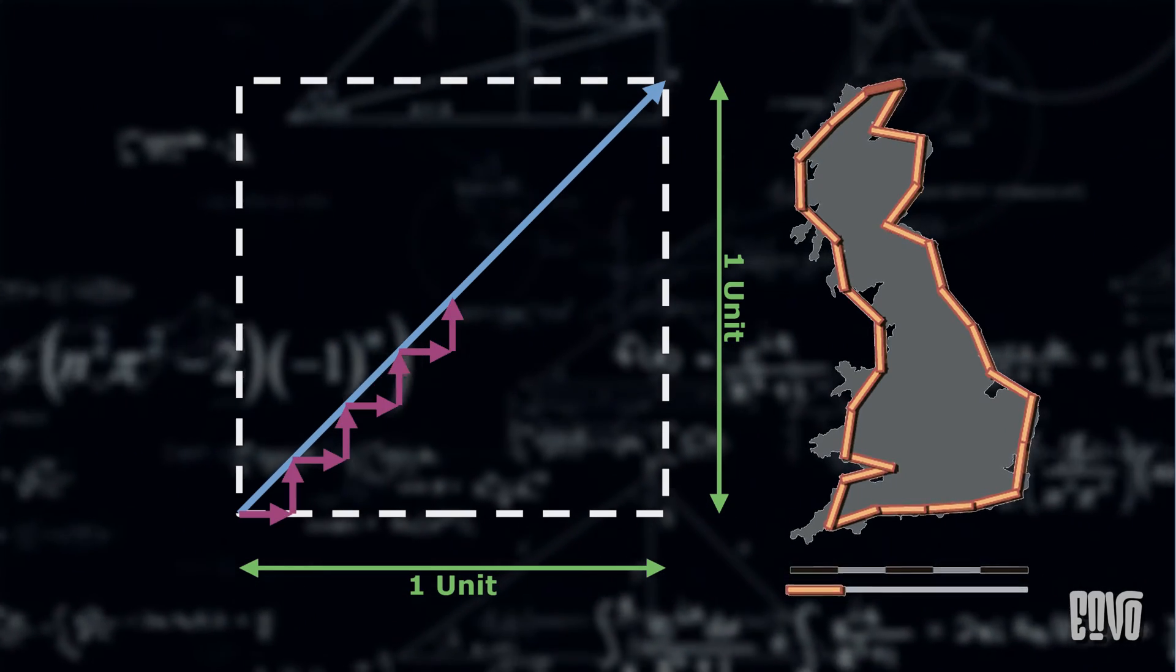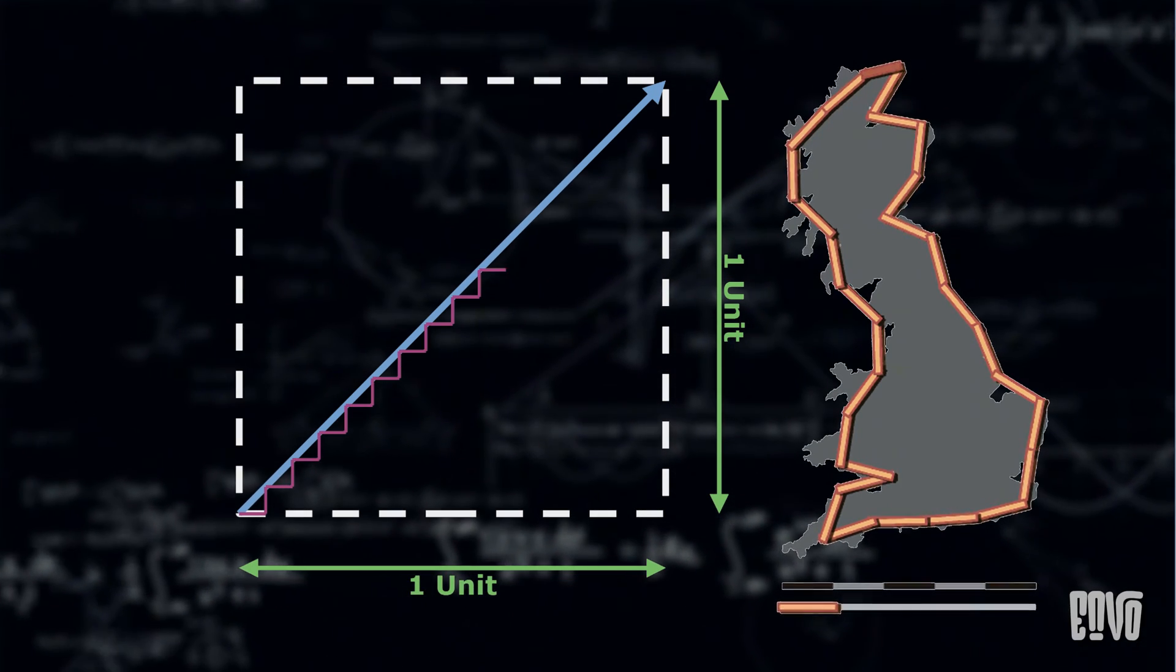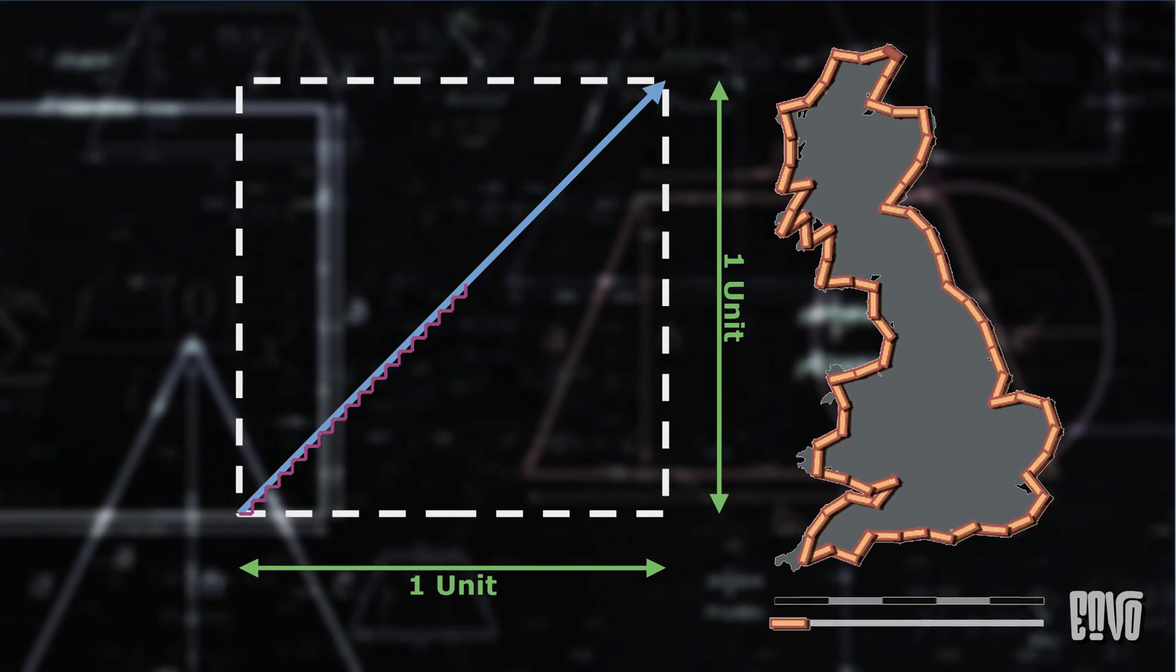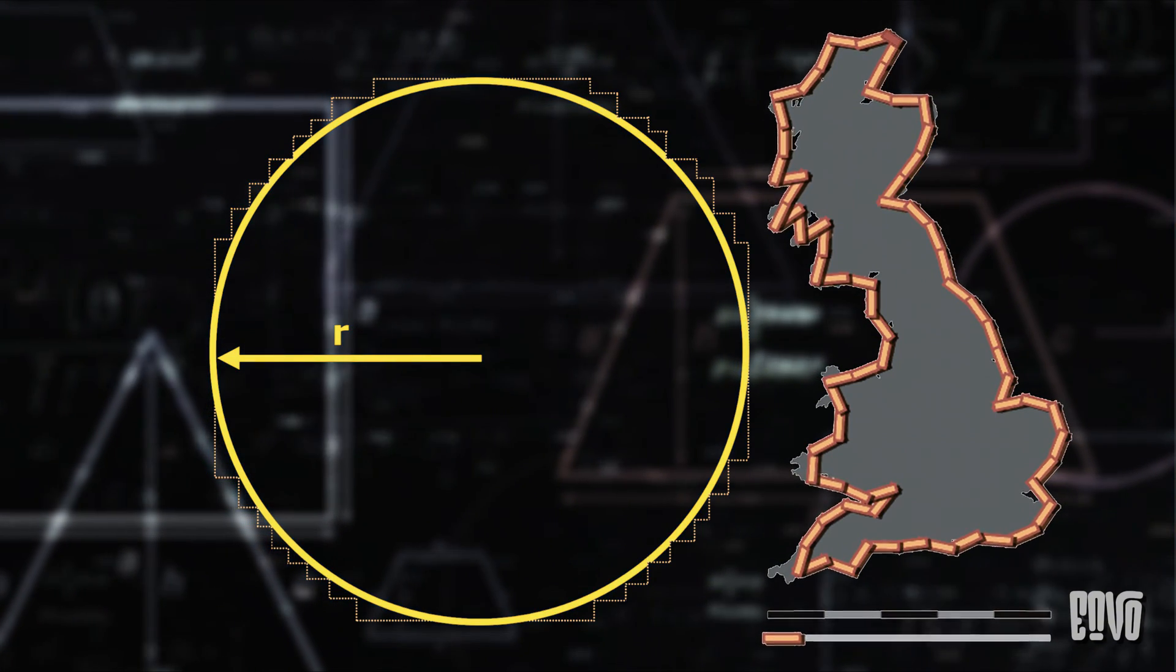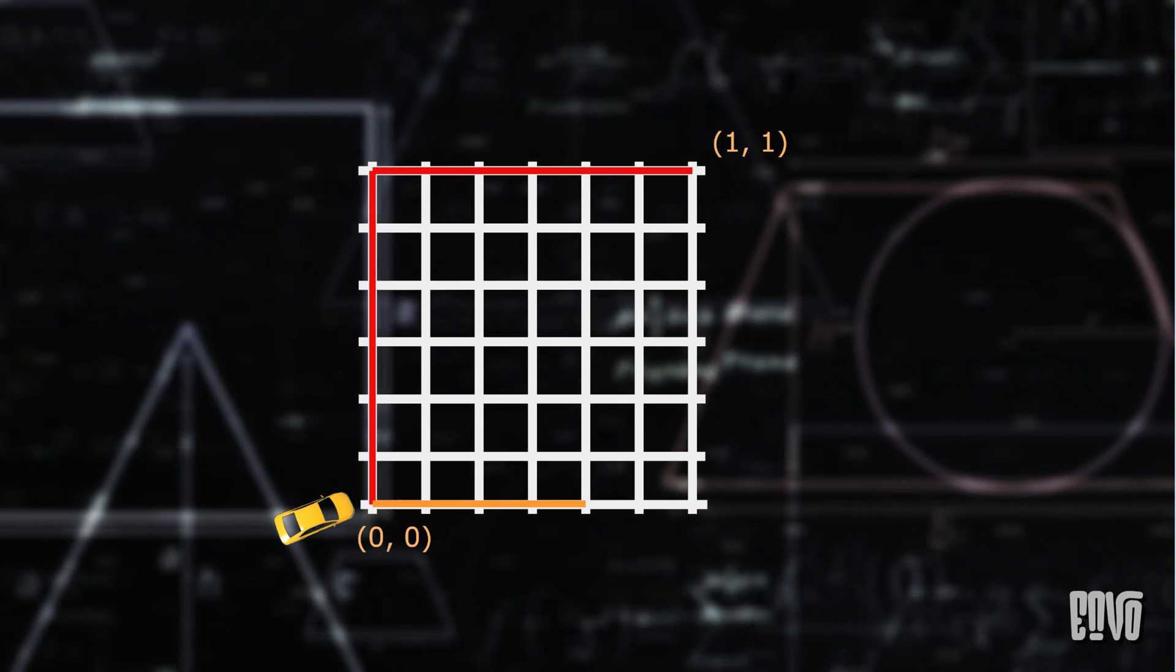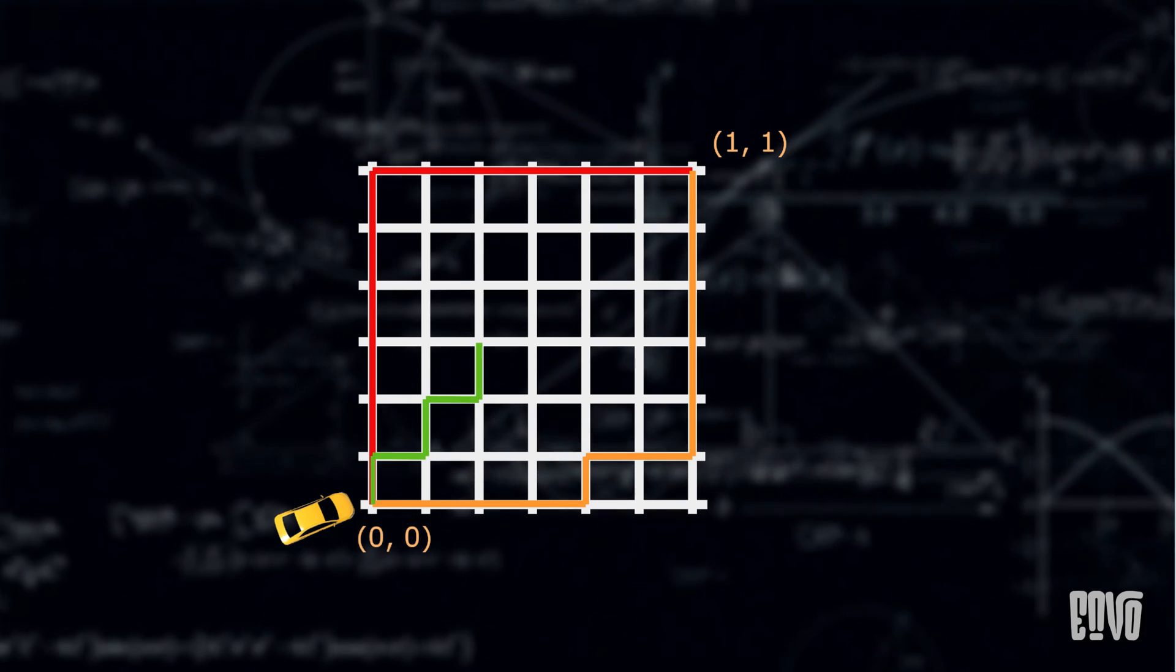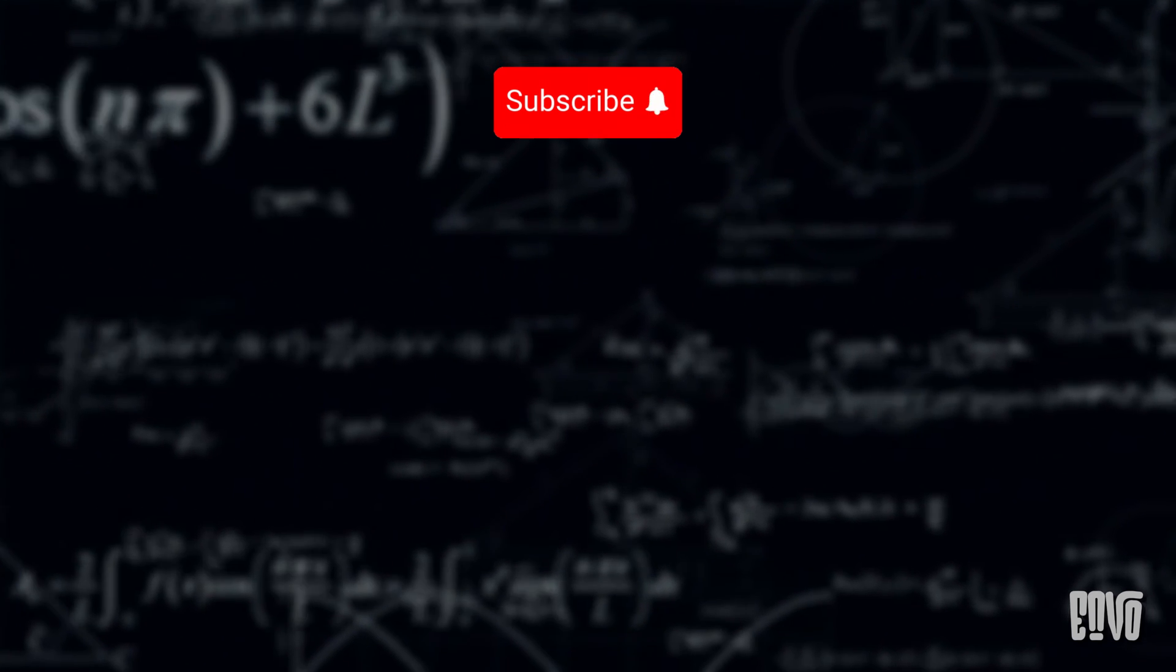So, the next time you see a seemingly simple geometric problem, remember the staircase and the coastline. They're not just mathematical oddities. They're invitations to think more deeply about the nature of space, dimension, and the very act of measurement itself. And who knows, maybe they'll inspire you to explore the fascinating world of fractals and beyond. If you found this mind-bending journey fascinating, make sure to like this video and subscribe to our channel for more deep dives into the surprising world of mathematics. What other paradoxes should we explore next? Let us know in the comments below.